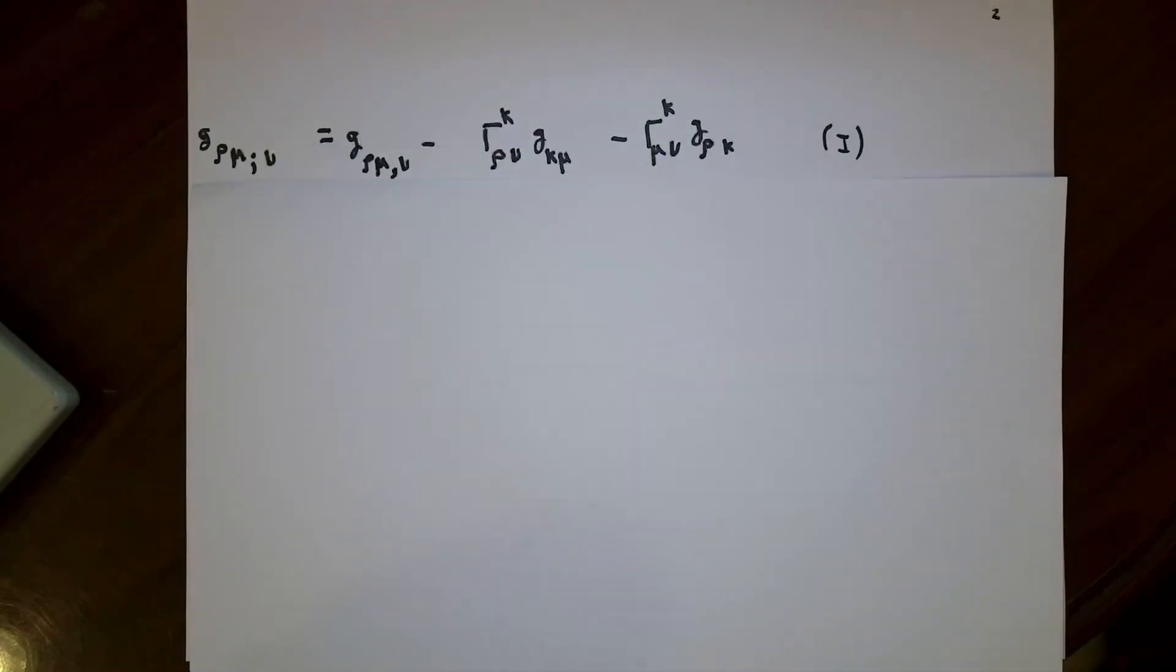I'm going to write down that same equation again using indexes ρ, μ, and the index of differentiation will be ν. This equation is true even if I used different letters for the indexes. So I'm going to write down two other equations.